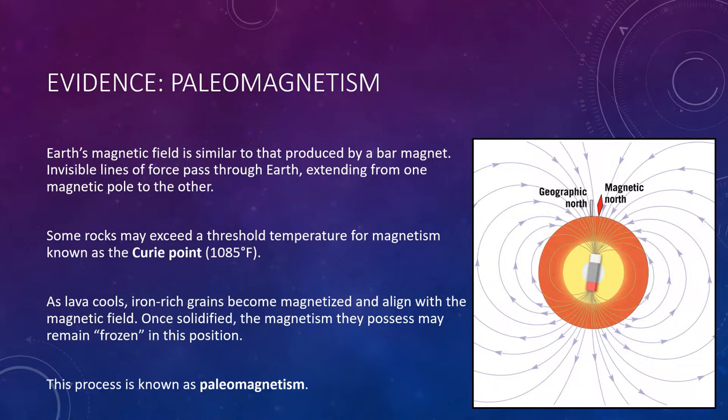You may be familiar with how a compass operates and know that Earth's magnetic field has a north and a south pole. Today, these magnetic poles roughly align with the geographic poles located where Earth's rotational axis intersects the surface — where we have the north and south poles of the Earth, we also have magnetic poles. Earth's magnetic field is similar to that produced by a simple bar magnet.